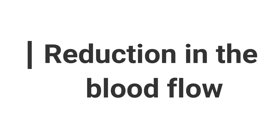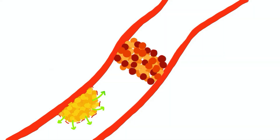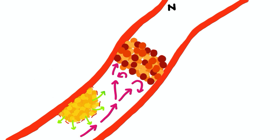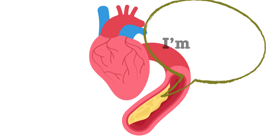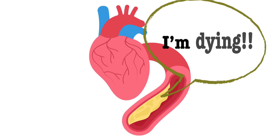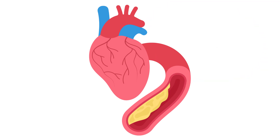Number four: reduction in blood flow. As the blood clot grows, it can significantly reduce or completely block blood flow through the coronary artery, depriving the heart muscle of the necessary oxygen and nutrients.